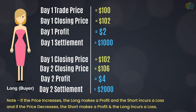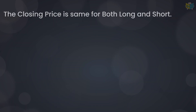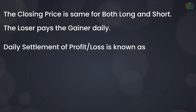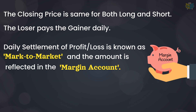If the long position is gaining $1,000 and $2,000, then the short position is losing $1,000 and $2,000 respectively. The closing price is the same for all traders and all futures contracts. The losers pay the winners every day and the losses are not carried forward. This daily settlement of profit and loss is called mark-to-market and the amount is automatically adjusted to the margin account.